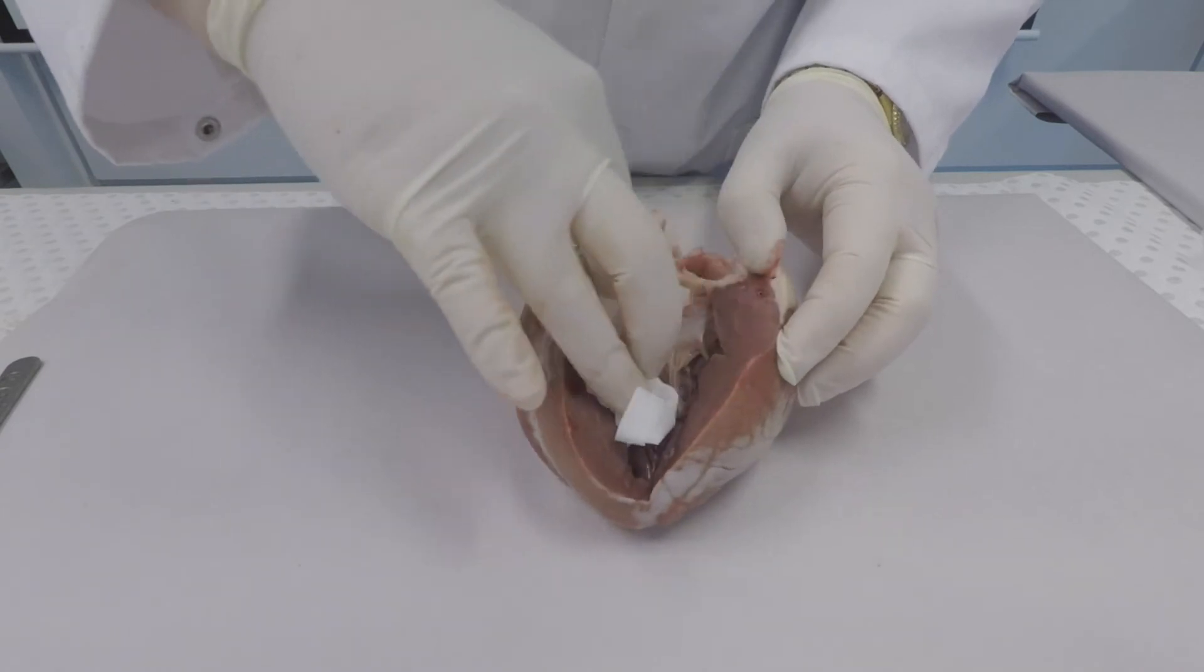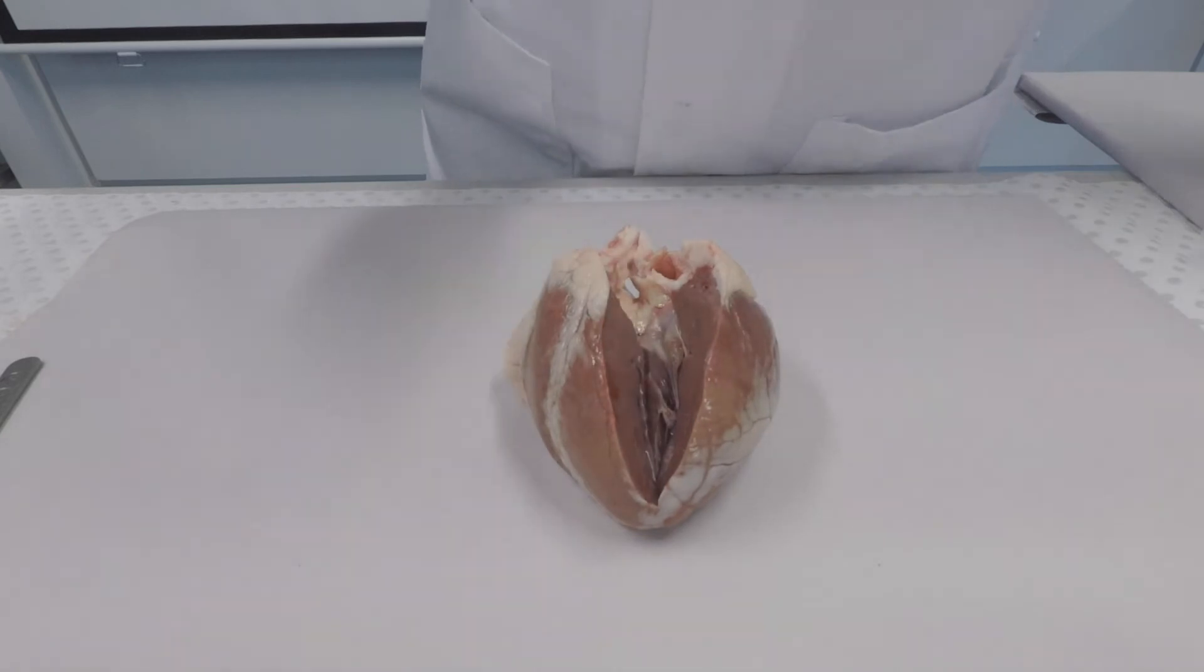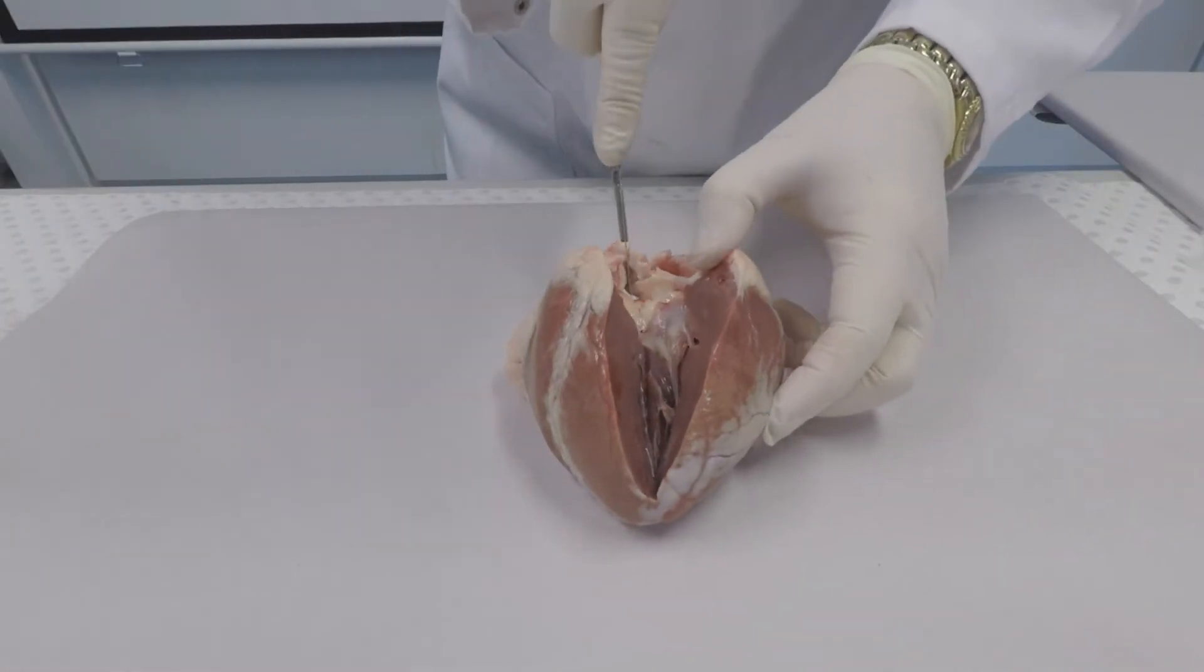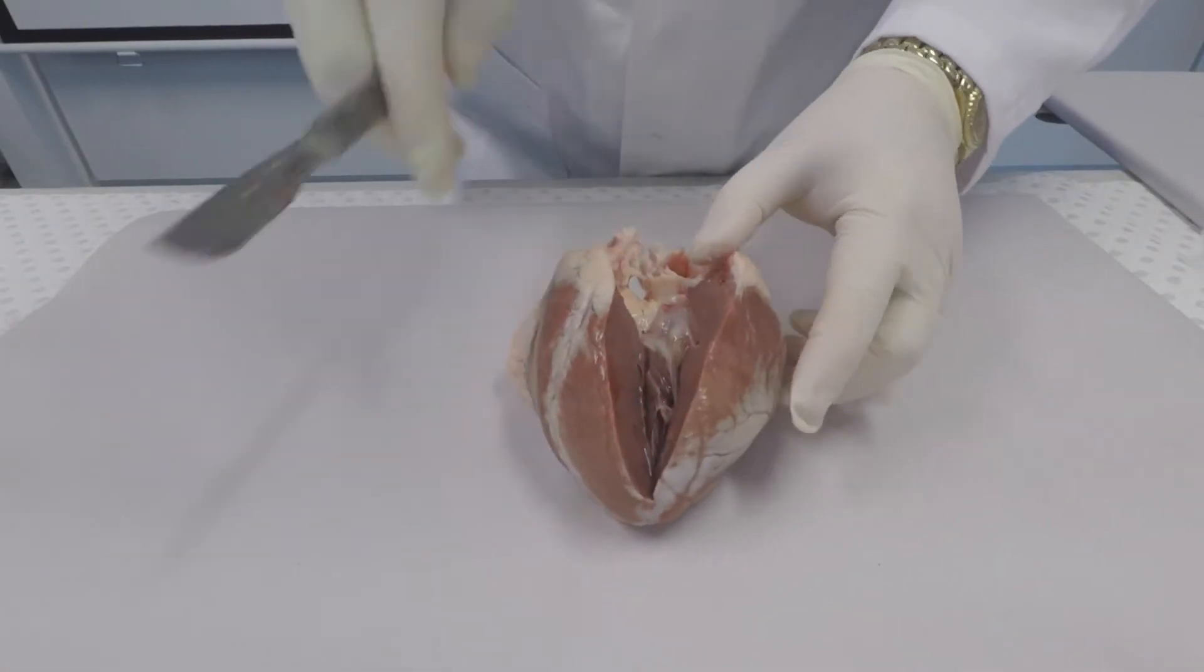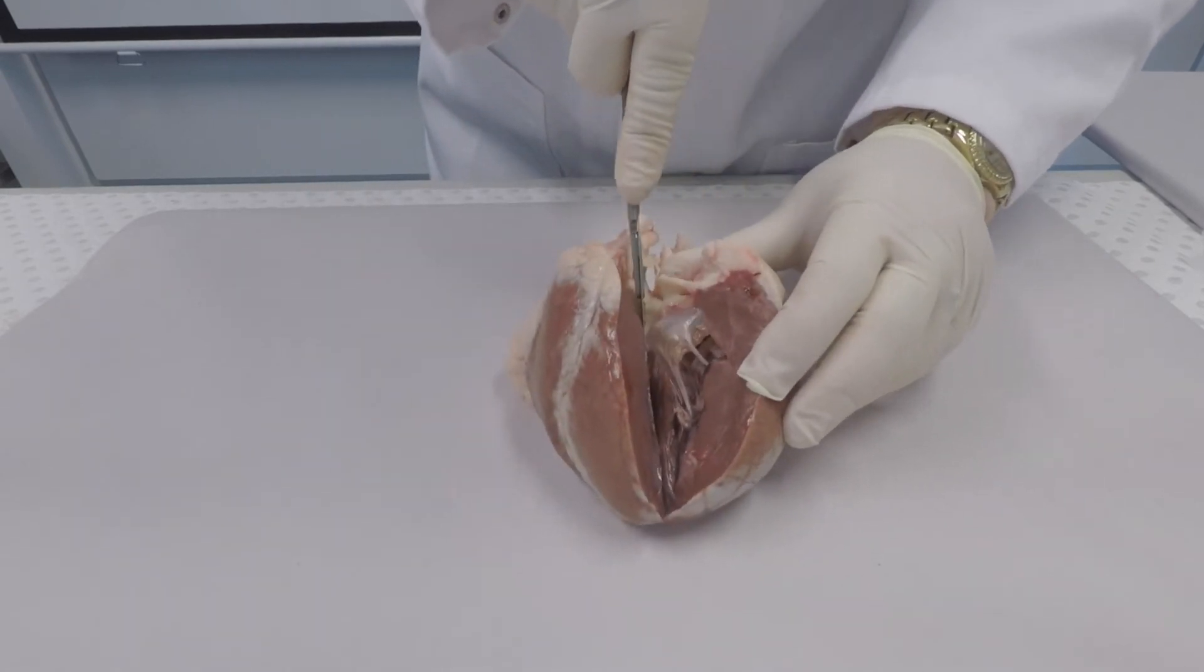Those veins are the vena cava which return deoxygenated blood to the heart, and the pulmonary vein which carries oxygenated blood from the lungs to the heart.